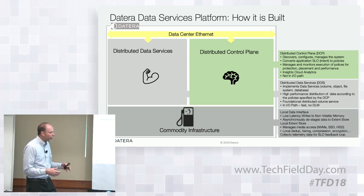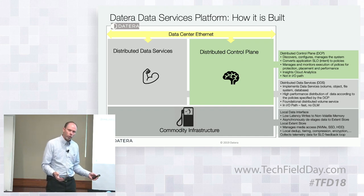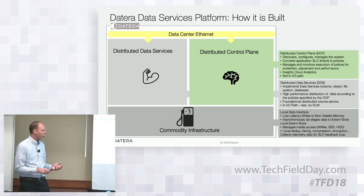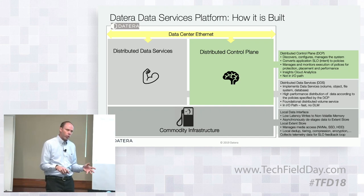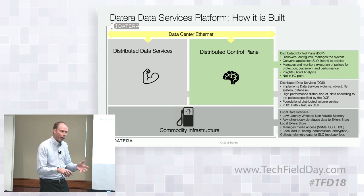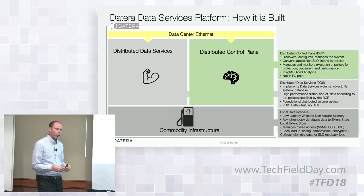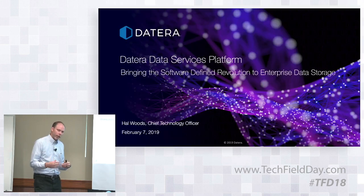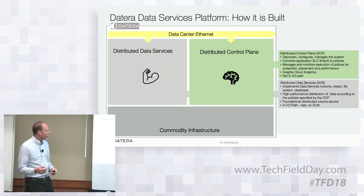The commodity infrastructure layer also has an associated software layer. It handles low-latency writes — we use non-volatile memory technology widely available in industry-standard servers to respond to the host as soon as we receive a write, giving us very good latency. It then destages that information back to the media.